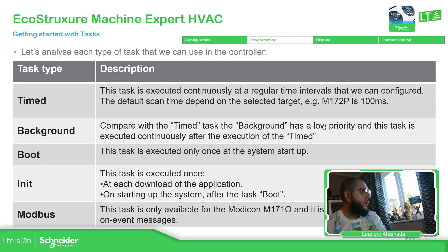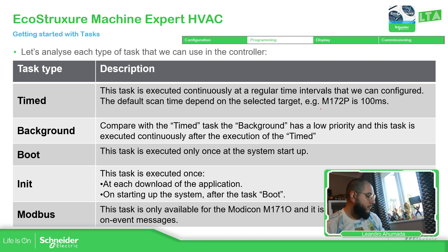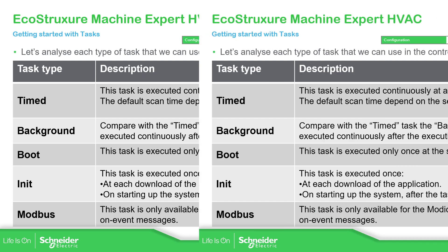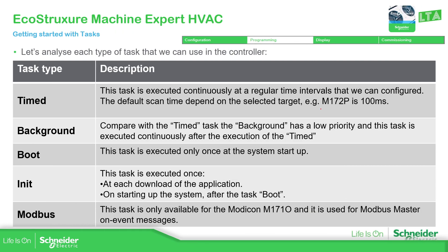What is the meaning of each task? We have the time and the background. The time task is executed regularly — the default period is 100 milliseconds. Comparing the two tasks that have the clock icon in the software, the background has a lower priority. We'll see what that means in a graph.